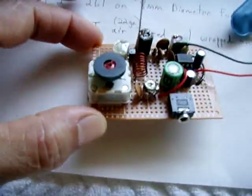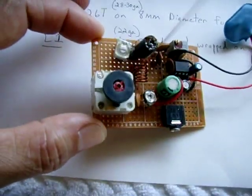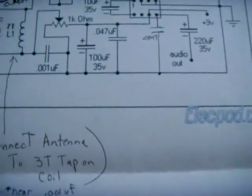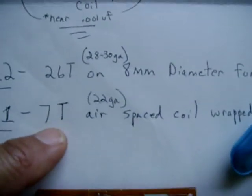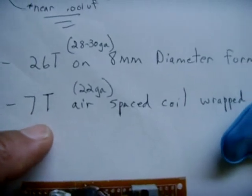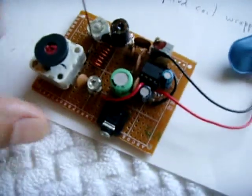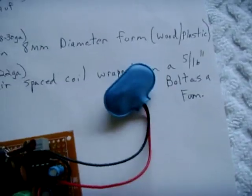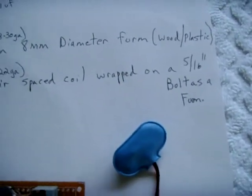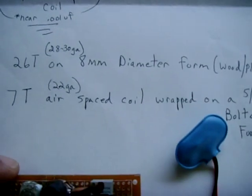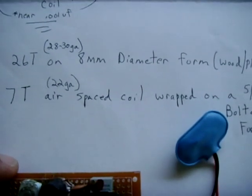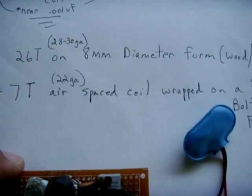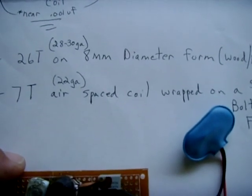This is the jack for the audio. L1 now is 7 turns of 22 gauge air-spaced as you can see right there. And that's wrapped around a 5/16th inch bolt. You just let it wrap around the threads and then when you're finished wrapping it around the threads, just unscrew the bolt out of the coil you just wound and then you're ready to go.